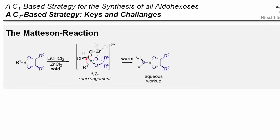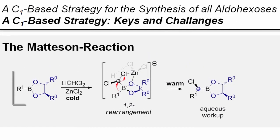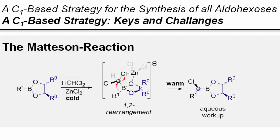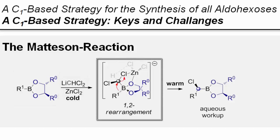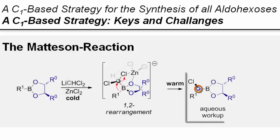Fortunately, there is one reaction which has the potential for doing exactly that. The Matteson homologation requires a chiral boronic ester to be reacted with a carbenoid, which is usually generated by deprotonating dichloro- or dibromomethane. This leads to an ate-complex, which can undergo a zinc-mediated 1,2-rearrangement, thus effectively inserting the single carbon atom of the lithiated dichloromethane into the carbon-boron bond, resulting in an elongated alpha-haloboronic ester. If you are having trouble with the mechanism, just press pause and check out the other video in which we explain it in much more detail.